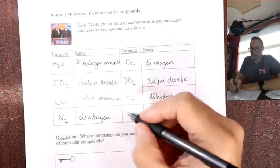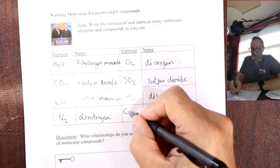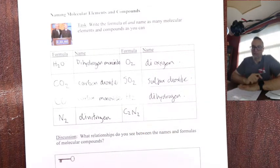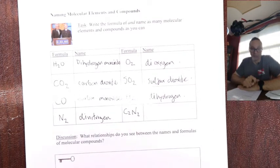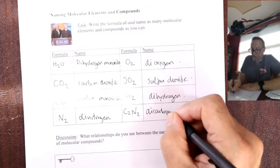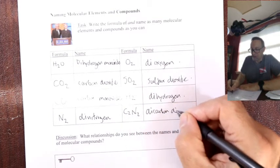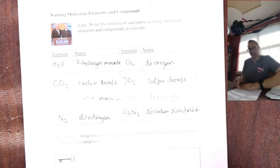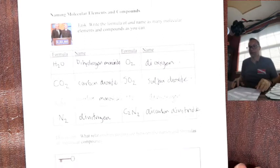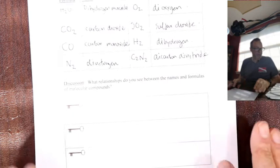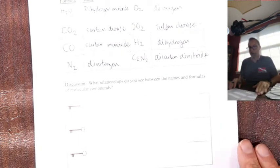Finally, last one. See if you can name this for me just based on your intuition. It's got a nickname, cyanogen. Cyanogen. Use that in graduate school. But it's two carbons, dicarbon, two nitrogens, dinitride, actually. Now, there are some good examples. Let's talk about the rules for naming.